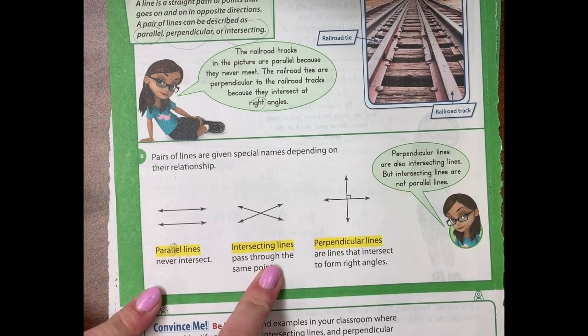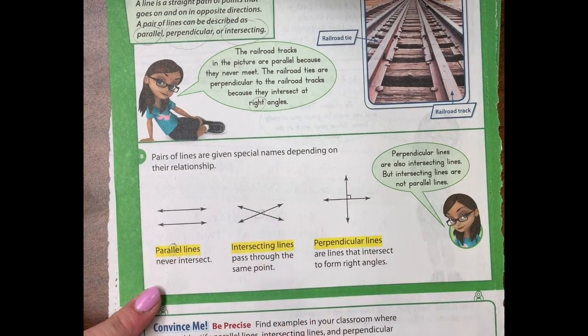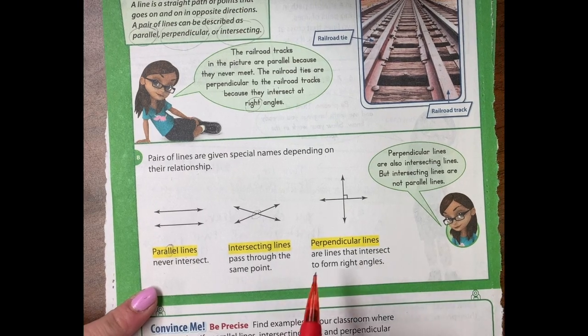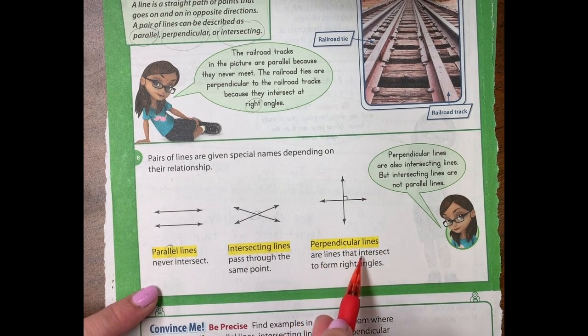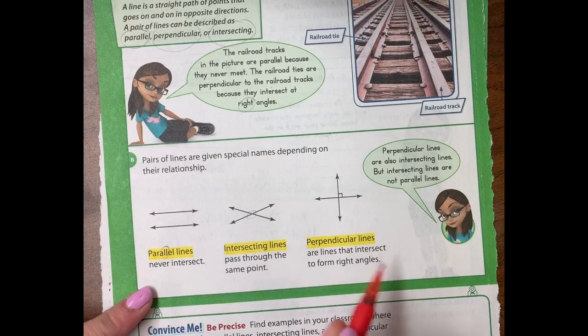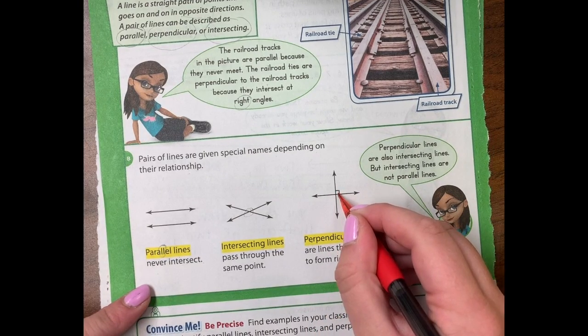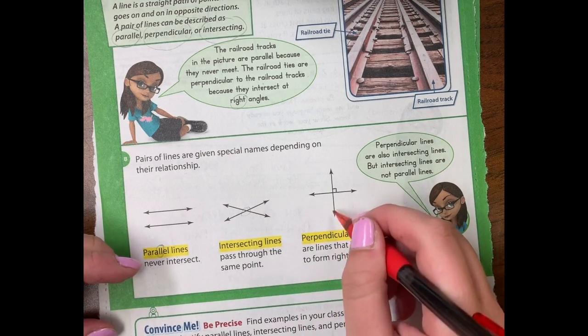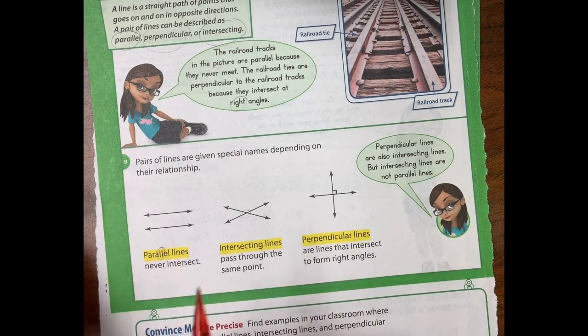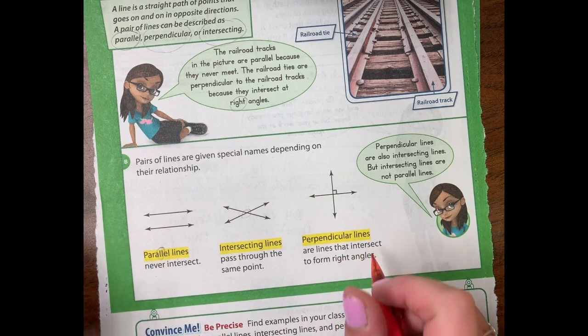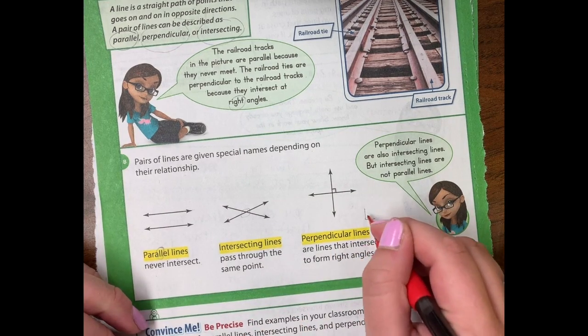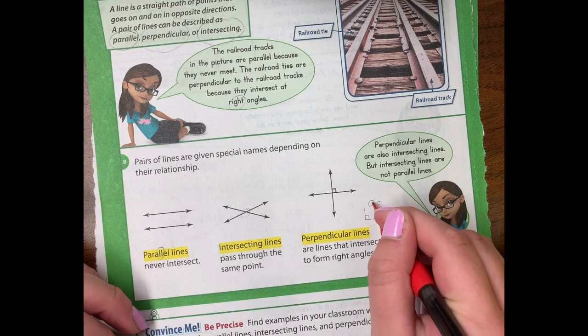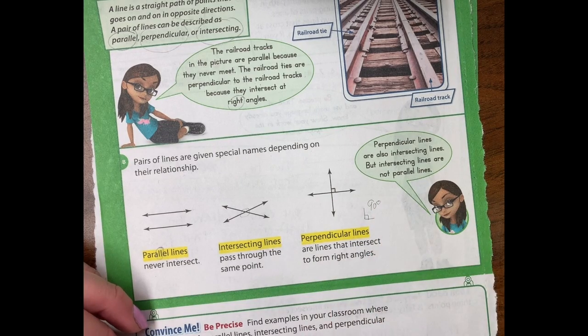Intersecting lines pass through the same point. So here they intersect right there. And perpendicular lines are lines that intersect to form right angles. We know that this square represents our 90 degrees or our right angle. So when they make that, like a corner of your book or a corner of your paper, it's forming that perfectly right angle, the 90 degree angle. So that's what perpendicular is.